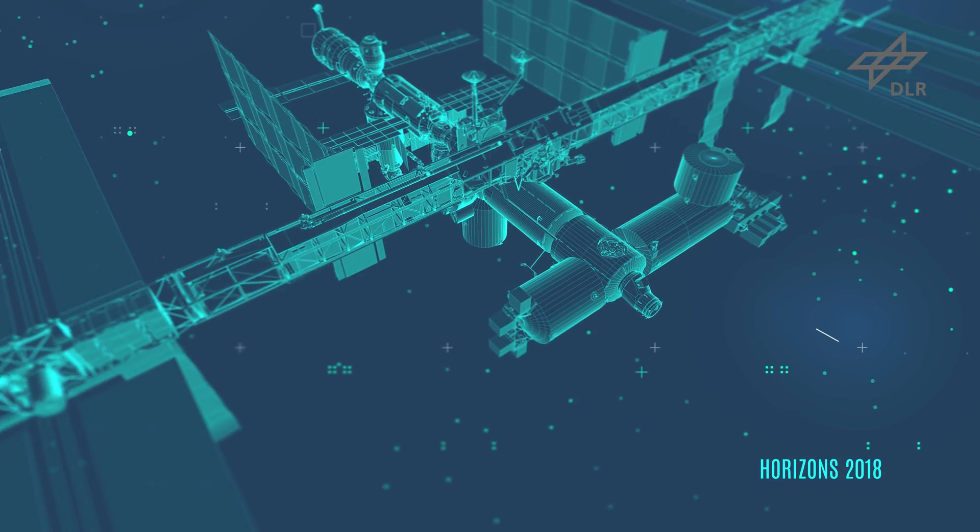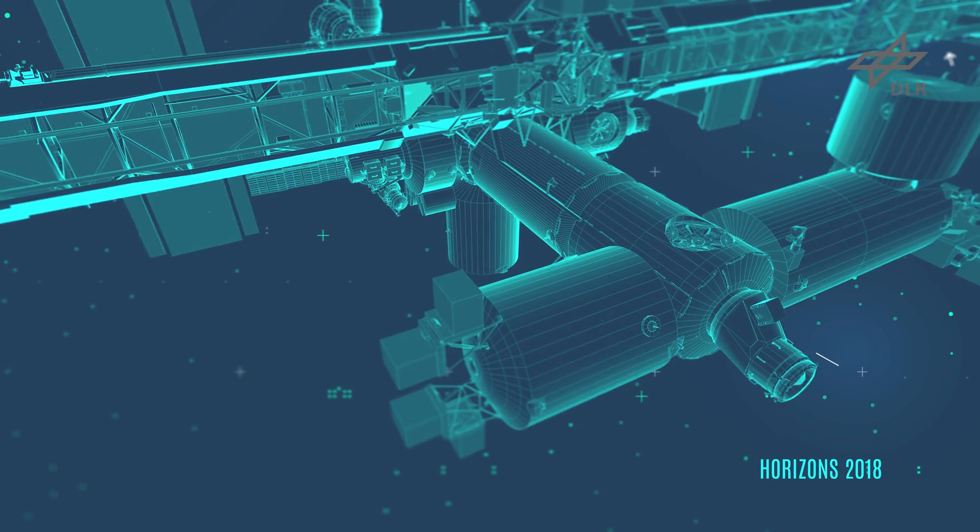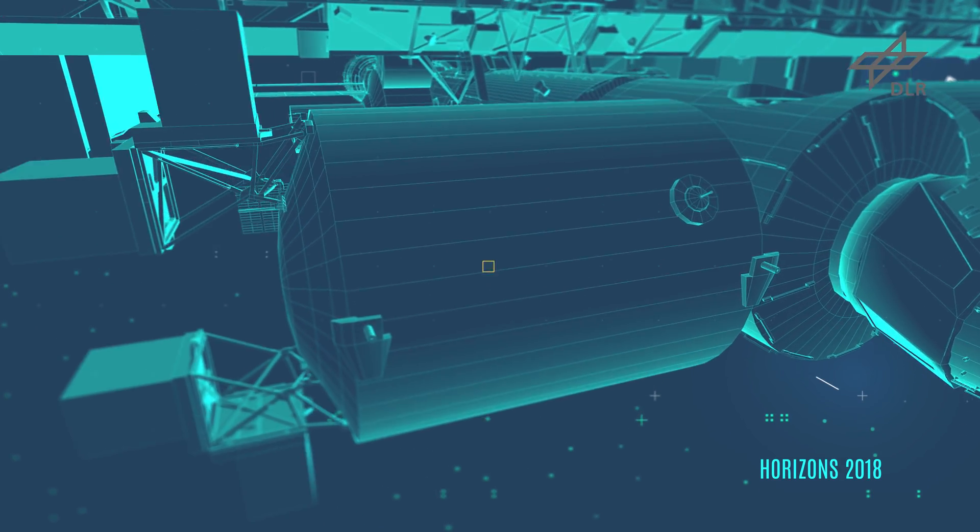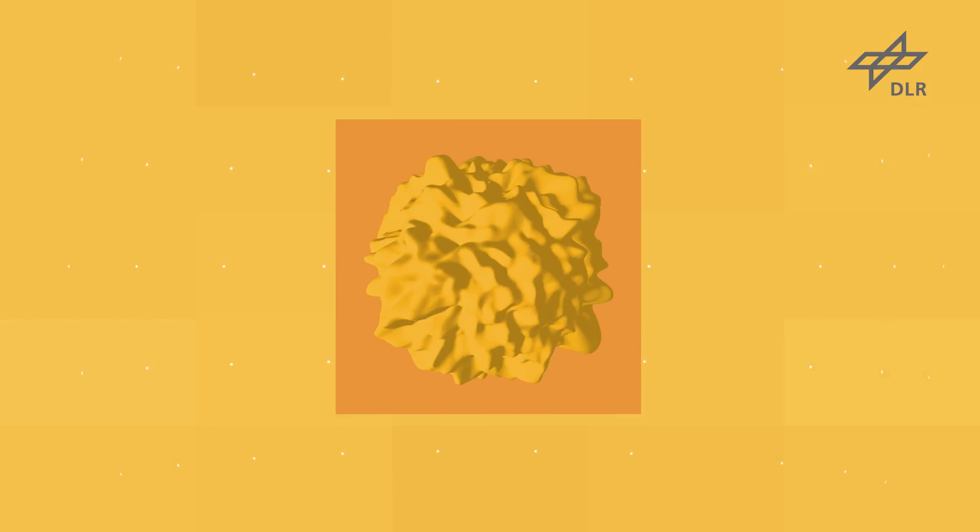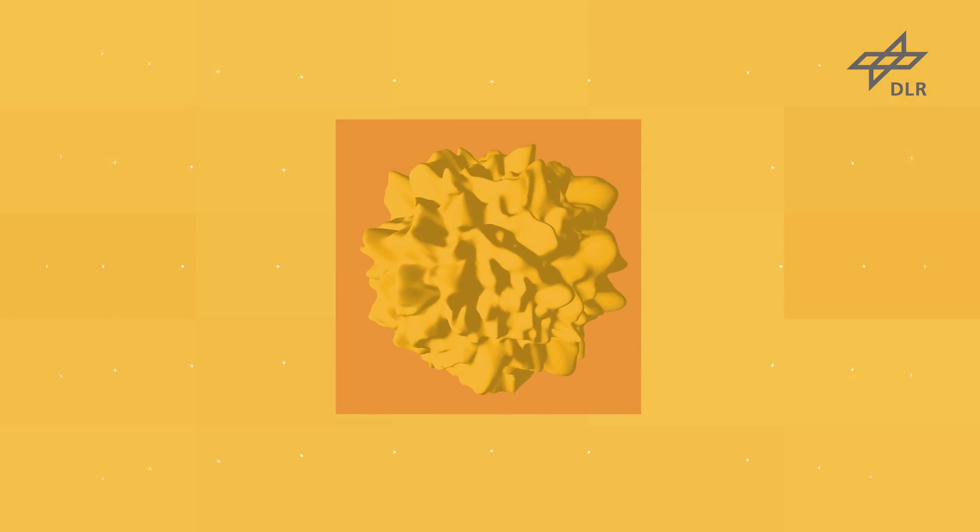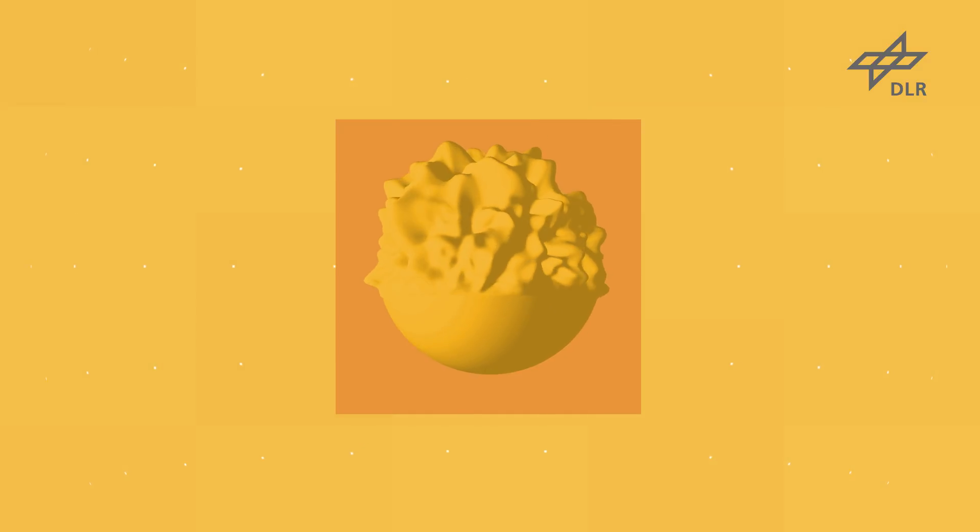Transparent One is an experiment conducted on board the International Space Station as part of the Horizons mission. It observes the behaviour of molten materials as they solidify in microgravity. This has never been studied before.